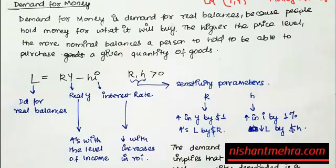Demand for money is actually the demand for real balances, because people hold money for what it will buy. The higher the price level, the more nominal balances a person has to hold to satisfy a given quantity of transactions. So if inflation is low, you need to keep less money with you, but if inflation is very high, you need to carry more nominal money balances to satisfy the same amount of purchases.